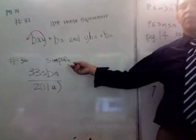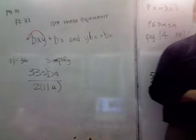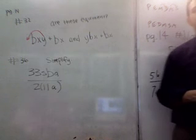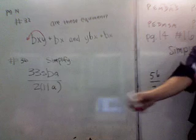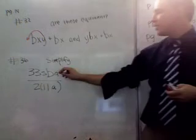Number 36. This one, this kind of question asks you to simplify. So, how do we do that? Yes, Alexis. All right. What you do on the bottom, you do 2 times 11 and that equals 22. Okay. And then you can, um, cancel out the A's. Yes, you can cancel out the A's because A over A.